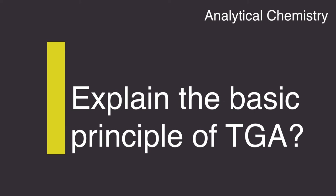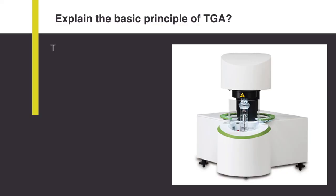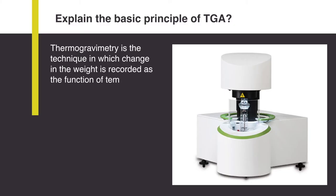Explain the basic principle of TGA. TGA or thermo-gravimetric analysis is the technique in which changes in weight are recorded as a function of temperature or time.